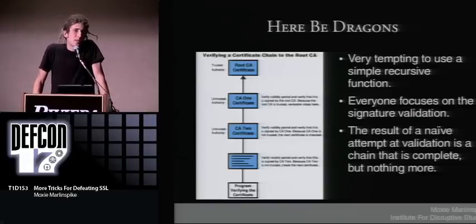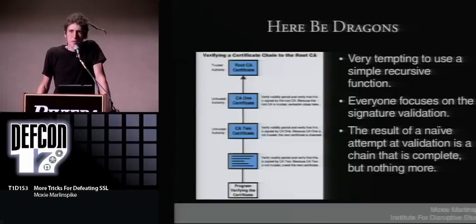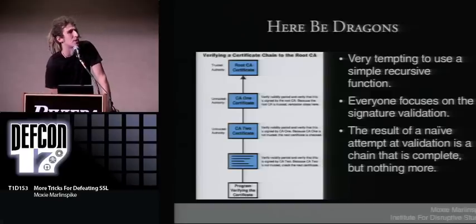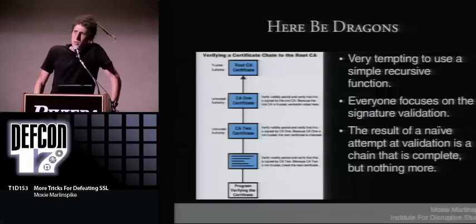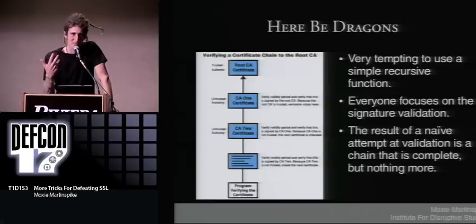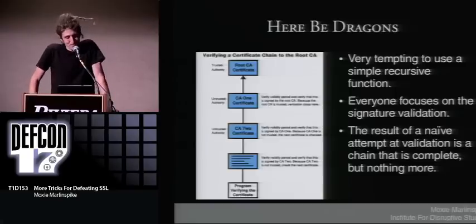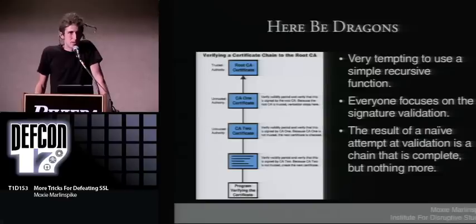I've said before that when looking for security vulnerabilities, a good place to start is where developers might not understand the full scope of what's going on, yet feel really good about the solutions they implement. When validating a certificate chain, it's common to use a simple recursive function — a developer might implement it and think, "man, I used recursion today and it was awesome." But the result of a naive recursive approach is that you will ensure a certificate chain is complete, but nothing more.